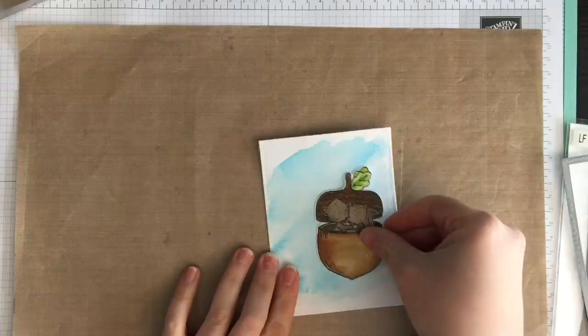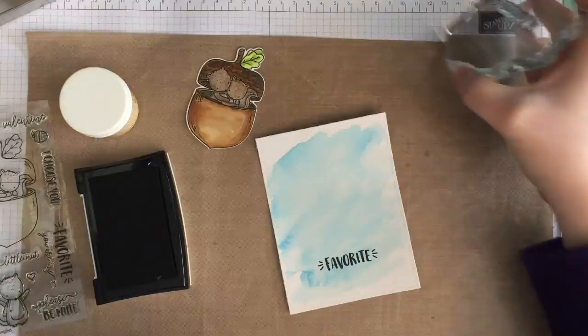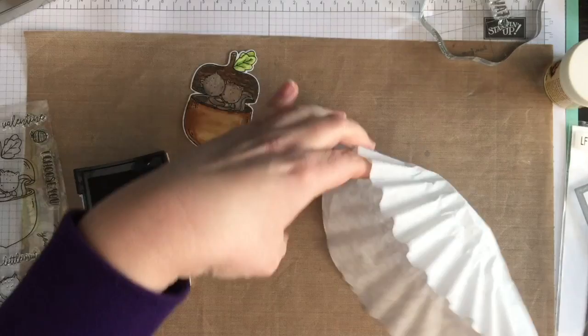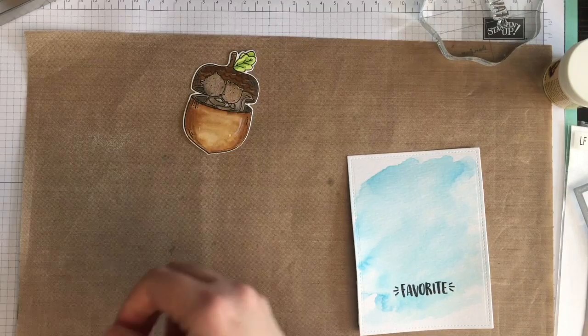And then I'm going to stamp my sentiment with the VersaFine Onyx Black ink and I'm going to heat emboss with some clear embossing powder. So I'm going to heat set that until it's melted. And then finish the sentiment by stamping 'you are my' above the word 'favorite' and 'Valentine' below the word 'favorite' using the same ink.